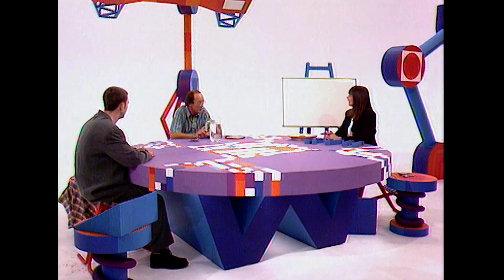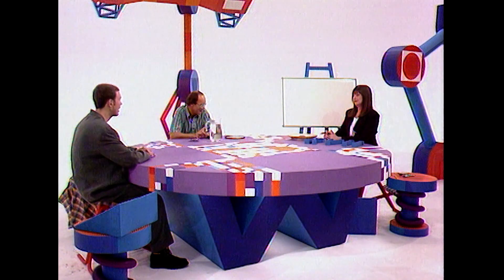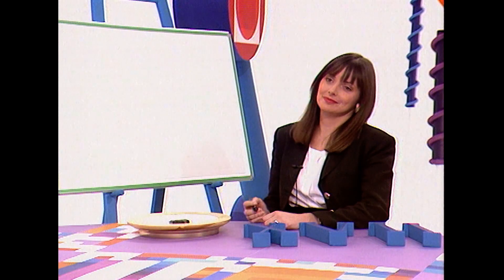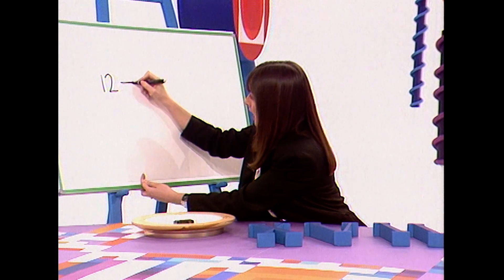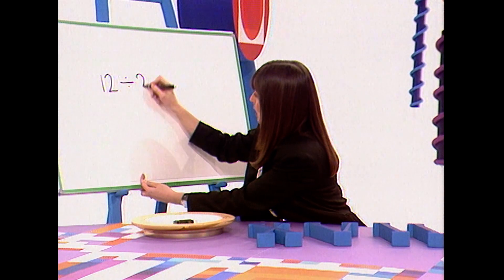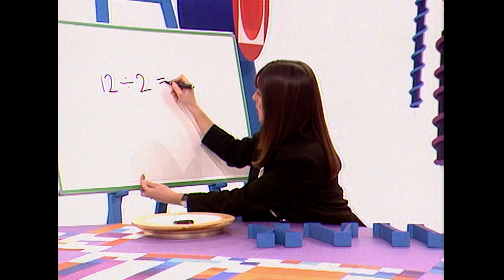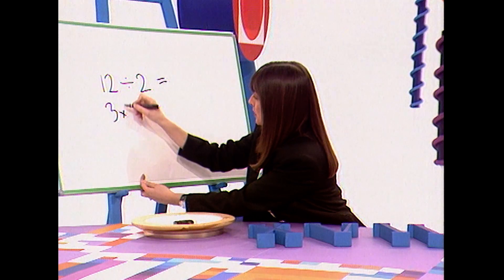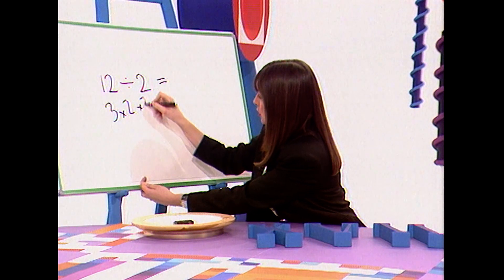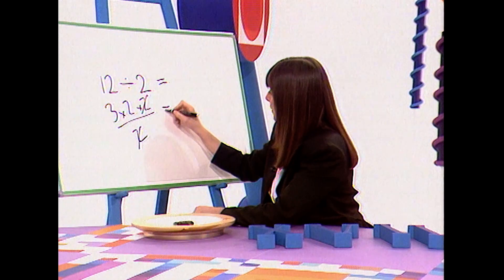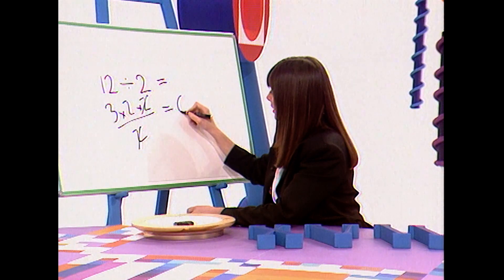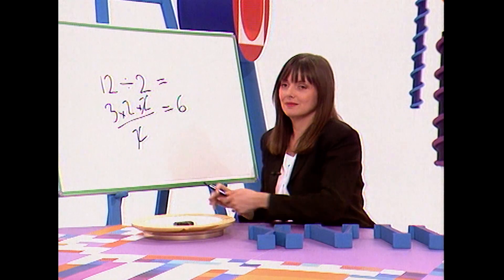How can 12 divided by 2 equal 7? 12 divided by 2 equals 6, Carol. Go on, prove it then. The key to this 'how' is that we don't use numbers or symbols like this — we go back to Roman times and use Roman numerals. They're still used today; you'll see them often on clocks and watches.